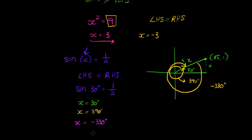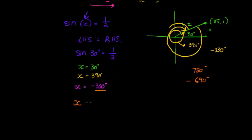Actually, for every multiple of 360 that I add, I'll get another solution, because I'm just adding a full rotation each time. At 390, adding another 360 gives 750 degrees — also a solution. Subtracting another 360 gives negative 690 degrees — another solution. So the solution is not just x equals 30 degrees, but x equals 30 degrees plus 360 times k, where k is some integer.